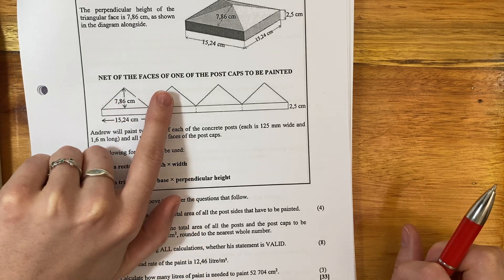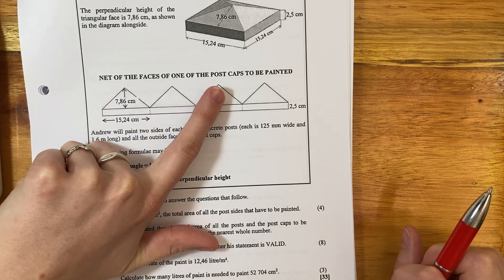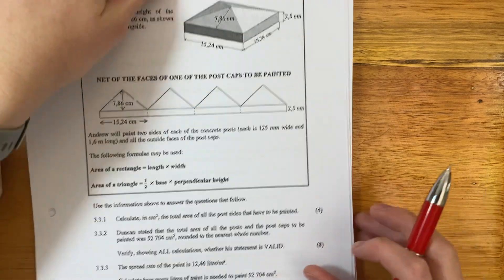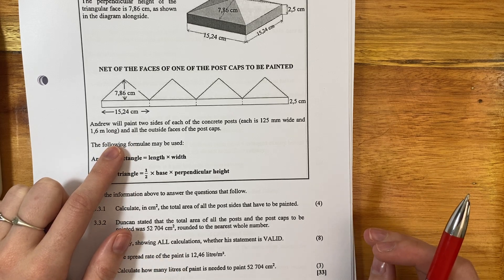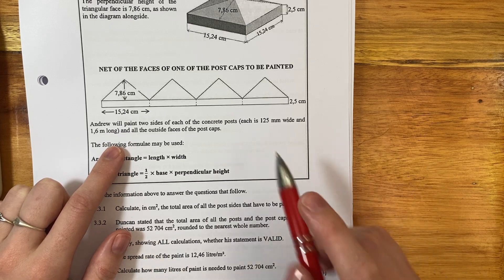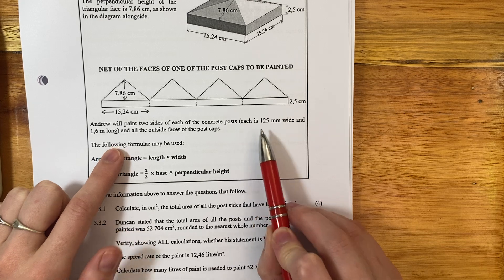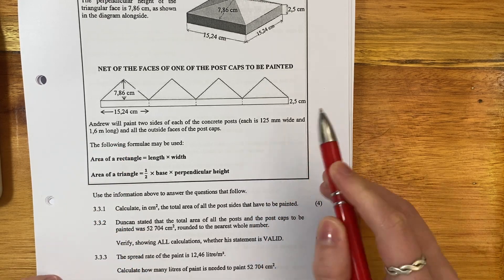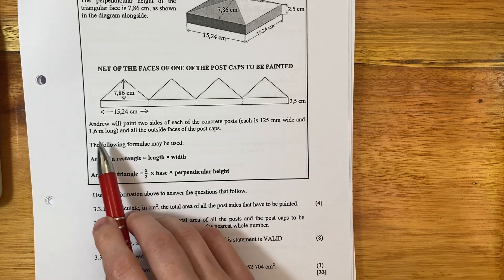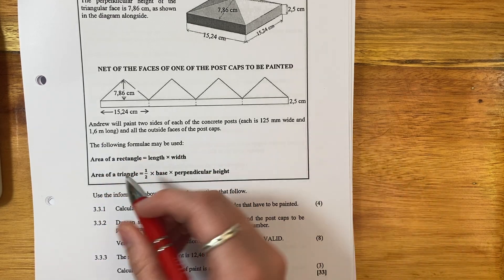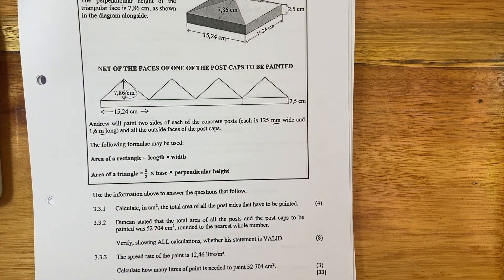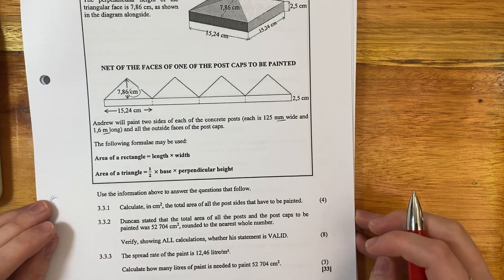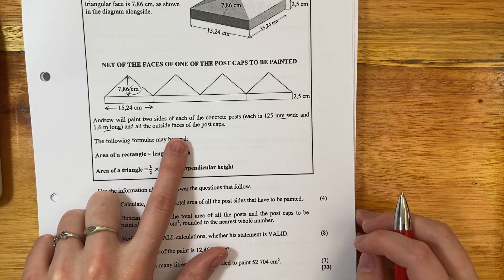It's shown us very nicely how this works. The perpendicular height of the triangular face is 7.86 centimeters as shown in the diagram. So everything's in centimeters, be happy about that. Let's keep reading. The net of the faces of one of the post caps to be painted, it's just to show you this in a different form.